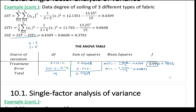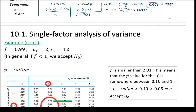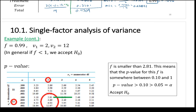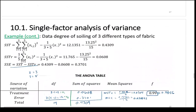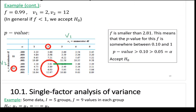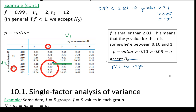We have our F statistic of 0.99 and degrees of freedom V1 equals 2, V2 equals 12. Looking at the F table: our test statistic 0.99 is less than 2.81, the smallest value in that section. This implies our p-value is greater than 0.1, which is greater than alpha of 0.01. So we fail to reject H-zero.